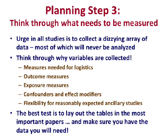Think carefully about what has to be measured. There's a great urge to measure everything, but avoid confusing data needed for patient management with data needed for research. I put data into five categories and systematically determine what I need for each: measures needed for logistics, outcomes, exposures, confounders and effect modifiers, and things needed for flexibility for expected ancillary studies.